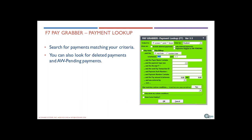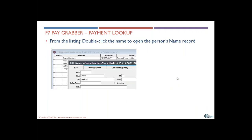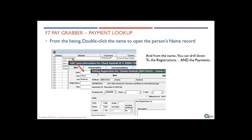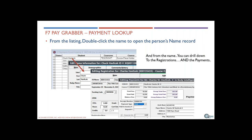Pay Grabber — for you finance people out there. This is a way to look up payments when you've got a needle in a haystack situation — someone calls about an esoteric payment. Pay Grabber allows you to search payments and drill back to all related records: the registration, the payment detail. Double-clicking the student name brings up the name record, and from there you can drill down to the registration and into the payment.